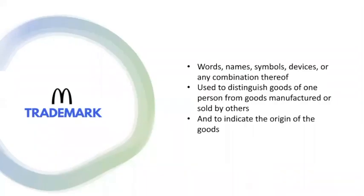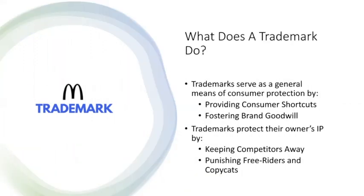On to trademarks. A trademark is a mark that consists of words, names, symbols, devices, sounds, or any combination thereof. The ultimate goal of trademarks is to distinguish the goods and services of one particular source from those of another. As such, trademarks are used as a means of indicating the origin of goods and services. In that trademarks are used to create a brand for goods and services, they're intended to serve as a means of consumer protection. Trademarks can enable consumers to easily identify their favorite brands and distinguish them from products made by others.